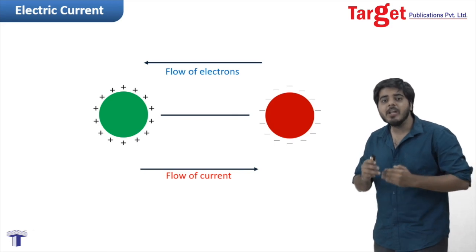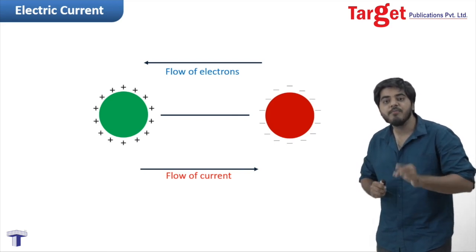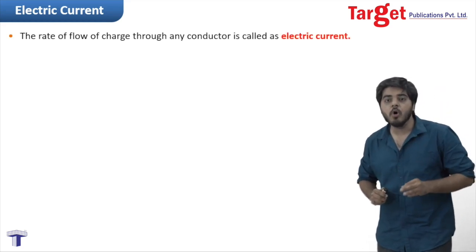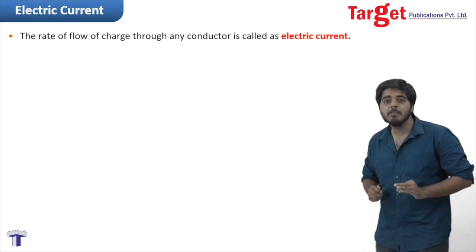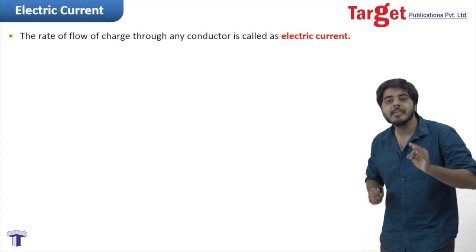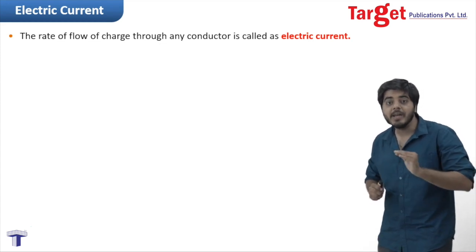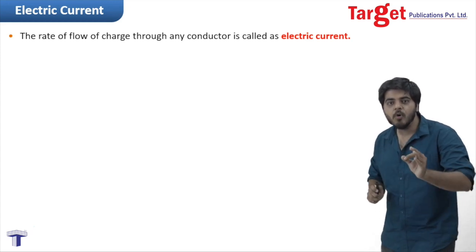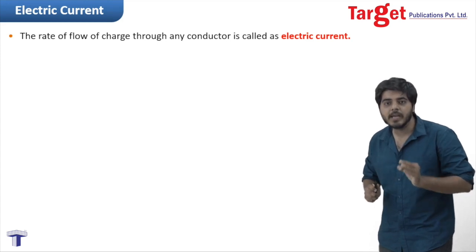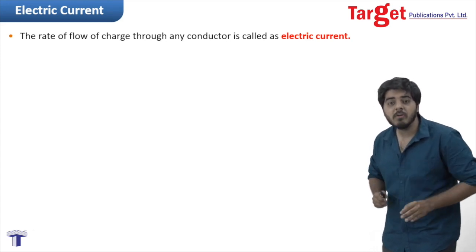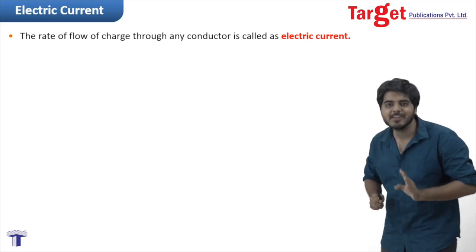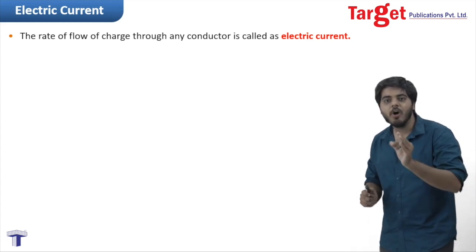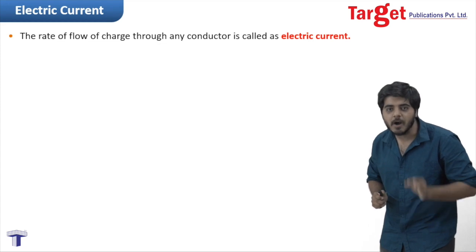The definition of electric current says: electric current is the rate of flow of charge. Rate means charge is flowing over some amount of time. Our charge is flowing through a conductor, so the definition is: electric current is the rate of flow of charge through a conductor.